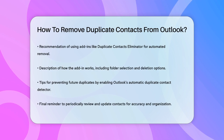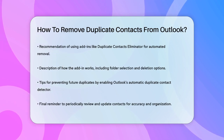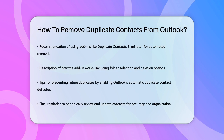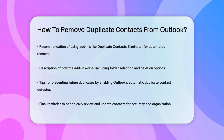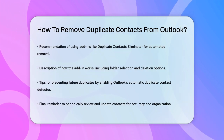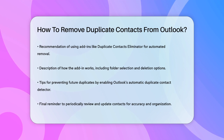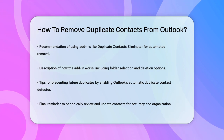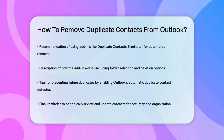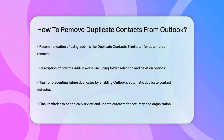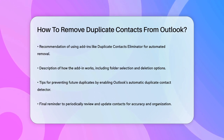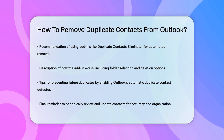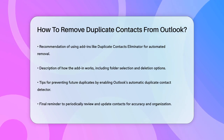To prevent duplicates from happening in the future, you can enable Outlook's automatic Duplicate Contact Detector. Go to the File tab, select Options, then navigate to People. Under Names and Filing, check the box that says 'Check for Duplicate Contacts when saving new contacts.' This way, whenever you add a new contact with a similar name or email address, Outlook will suggest merging the contacts to avoid creating duplicates.